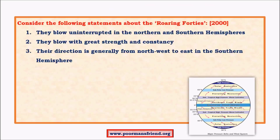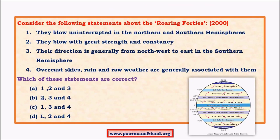Considering a question about roaring forties: roaring forties, furious fifties, and shrinking sixties are phenomena unique to the southern hemisphere — absent in the northern hemisphere. The statement that they blow uninterrupted in both hemispheres is wrong. They blow with great strength and constancy due to the absence of significant land mass reducing friction — correct. Their direction is generally from northwest to southeast in the southern hemisphere — correct. Overcast skies, rain, and raw weather are generally associated with them because horizontal movement across oceans carries moisture, causing cloud formation and rain — correct. So the answer is the statement about both hemispheres is wrong.